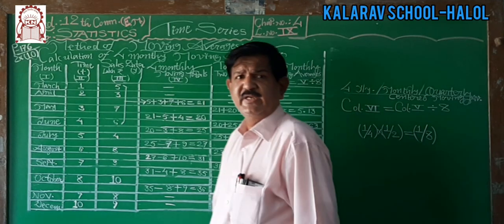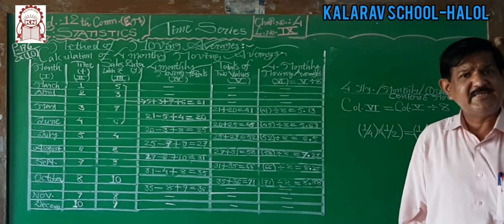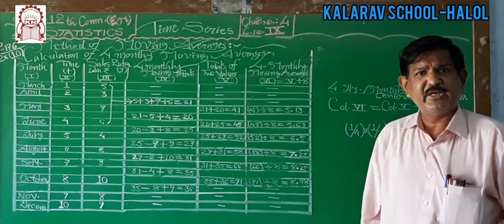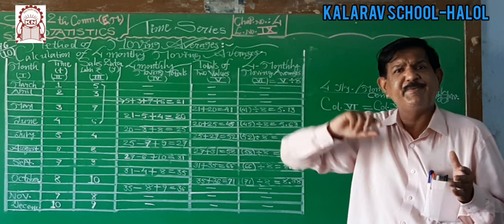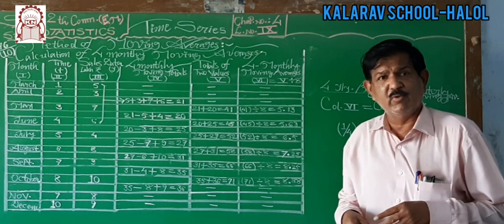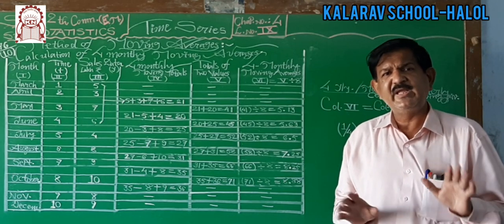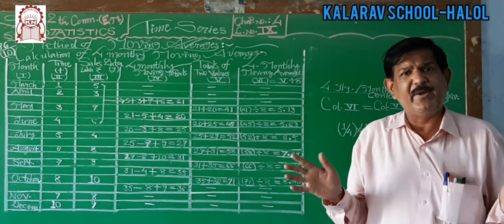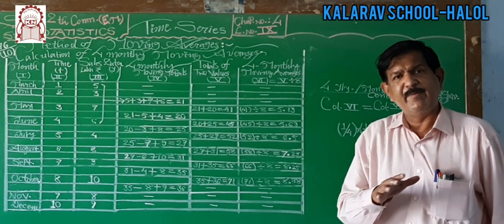These are the moving averages of 4 months or 4 quarters — an important method. In analysis of time series, 2 methods are very important: the method of least squares, giving the straight line trend y-hat = A + Bt with calculation of A and B; and the moving average method — 3-yearly, 5-yearly, 4-yearly, 7-yearly. Be careful about the calculations and how many columns to prepare for each type of example.